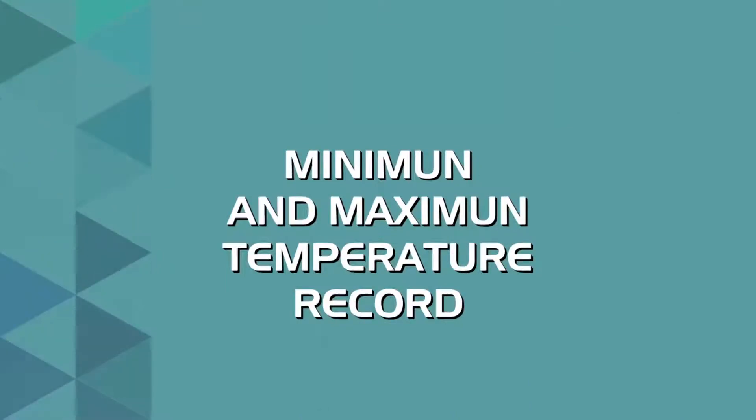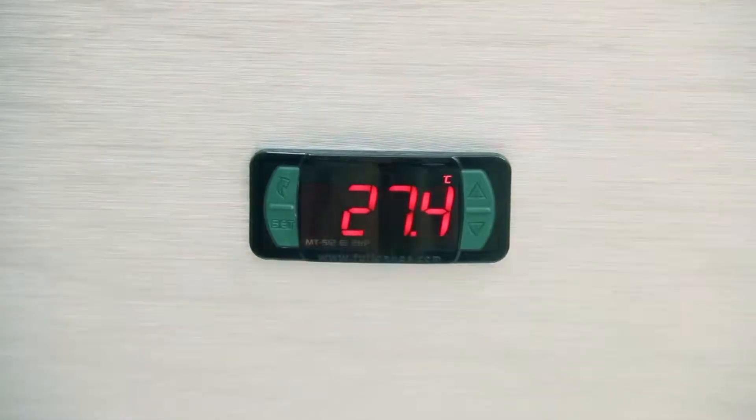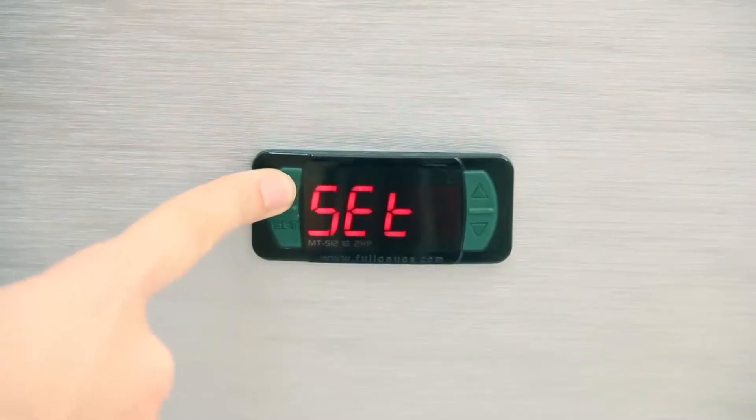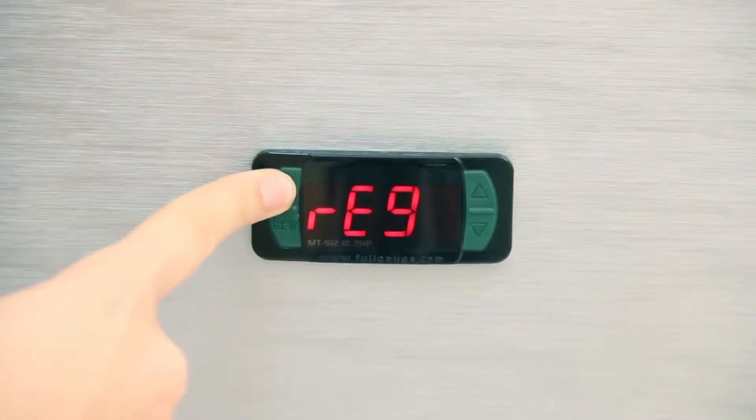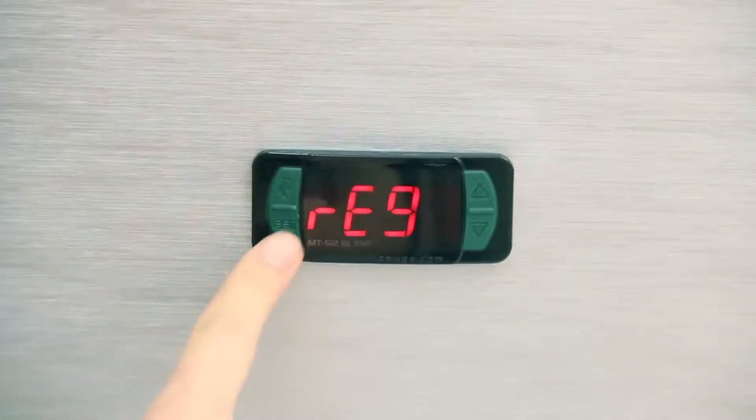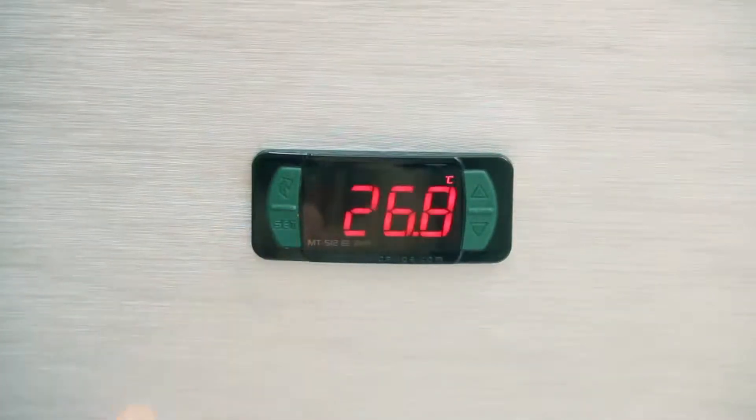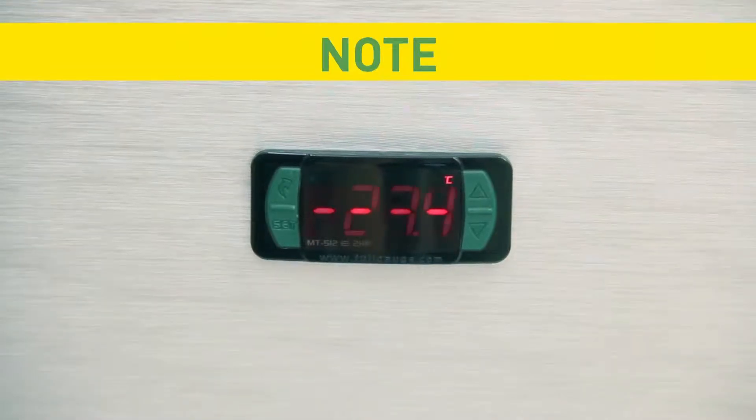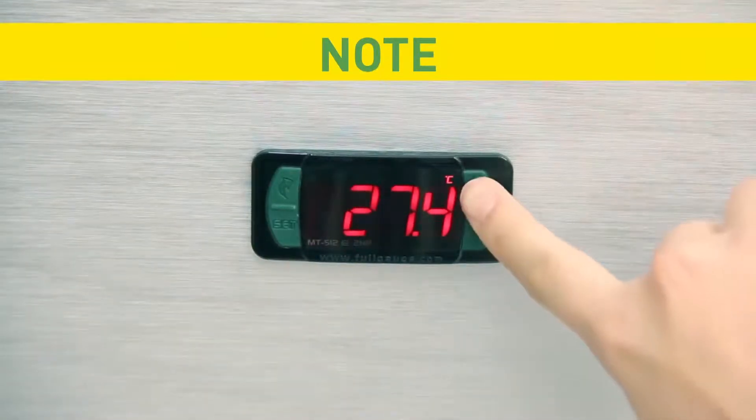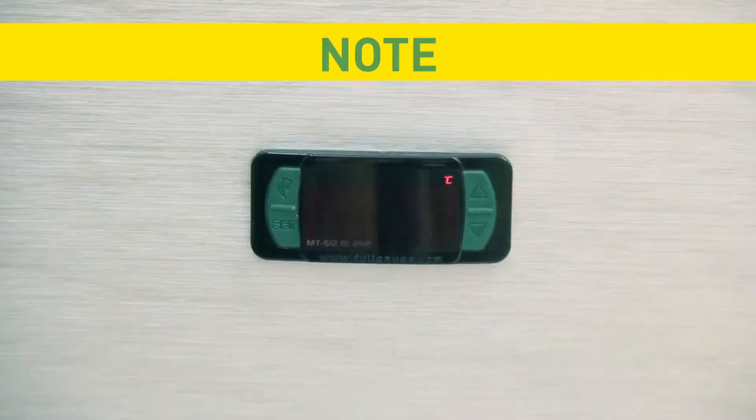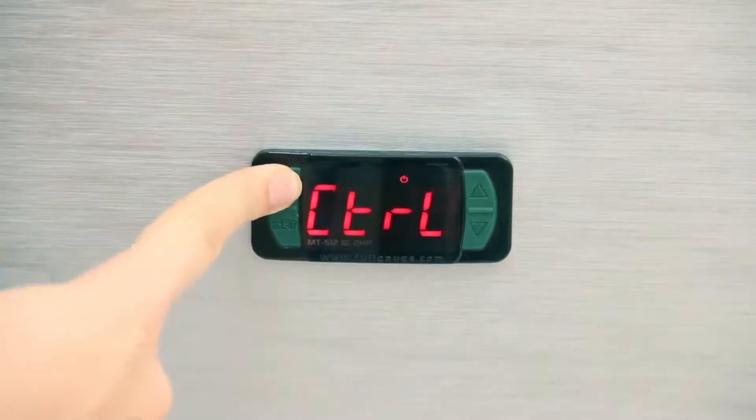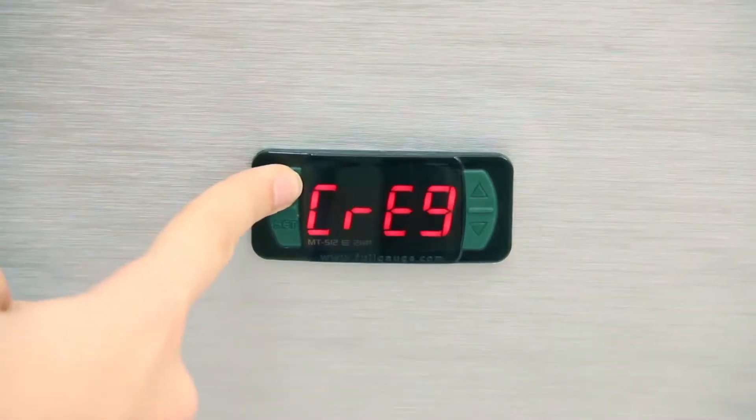Minimum and maximum temperature record: This function allows you to view, with an option to delete, the limit temperatures recorded in the process. Press FlatTech until the display shows record. Press set. Note: also to access the record function, press the up key once until the display shows the temperatures. To clear the values, click FlatTech until the record's cleaning message is displayed. Press set.